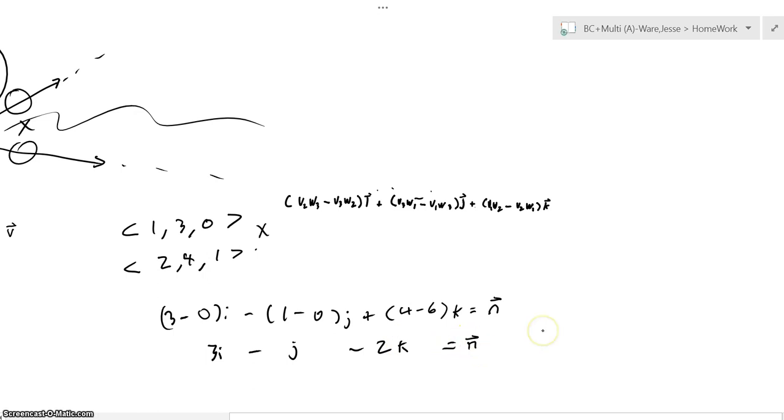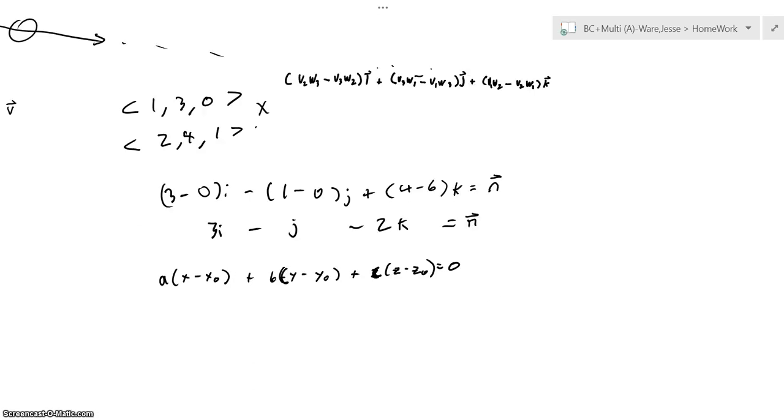Now with normal vector we can plug this into the equation of the plane. Which is this. And what's really nice about this problem is one of the points that we're given is the origin. So it crosses out all these knots here. These X, Y, and Z knots.